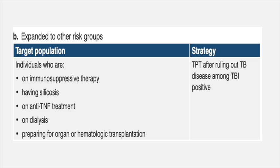This has been expanded to other groups — those on immunosuppressive therapy, patients having other forms of immunosuppression, on cancer treatment, on anti-TNF treatment, in end-stage renal failure with dialysis, transplant patients, or those preparing for transplant. Preventive therapy must be given after ruling out TB disease among those who are positive for TB infection. If they are not positive for TB infection, the choice can be made to wait and observe, but if they come out positive, we have to start TB preventive therapy.